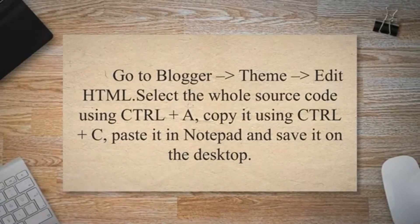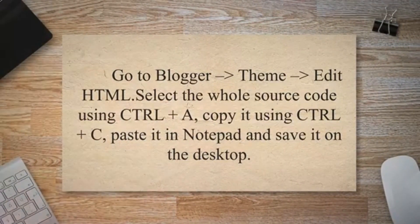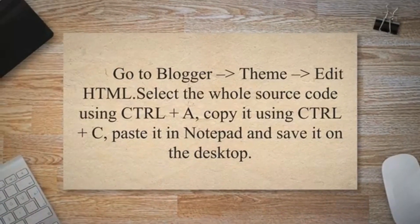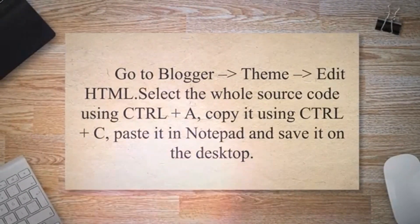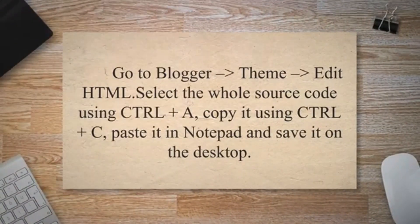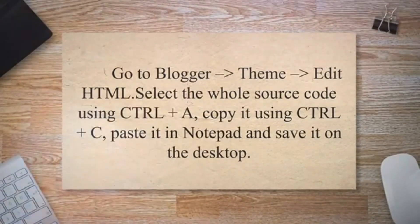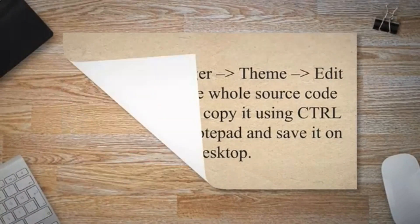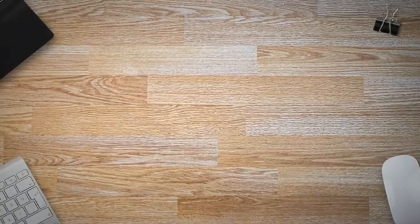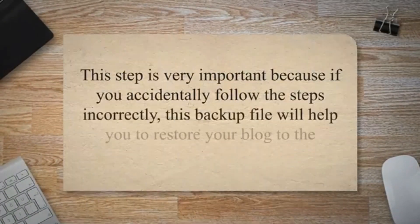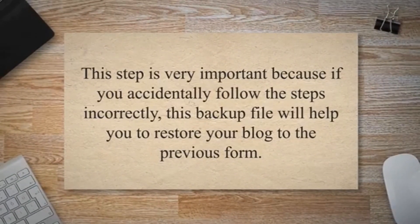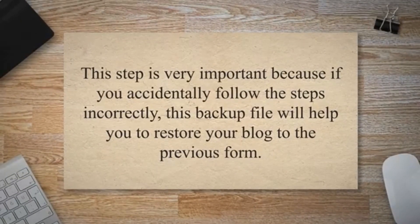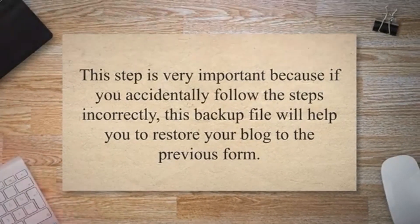Go to Blogger > Theme > Edit HTML, select the whole source code using Ctrl+A, copy it using Ctrl+C, paste it in Notepad, and save it on the desktop. This step is very important because if you accidentally follow the steps incorrectly, this backup file will help you restore your blog to the previous form.